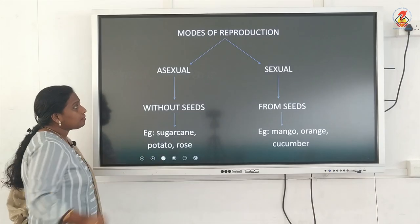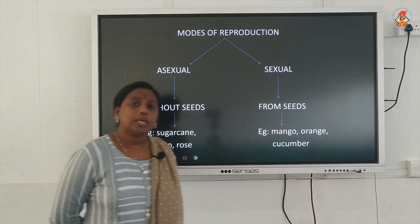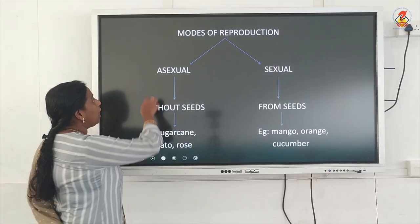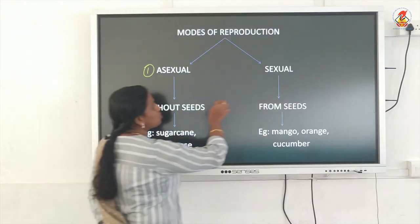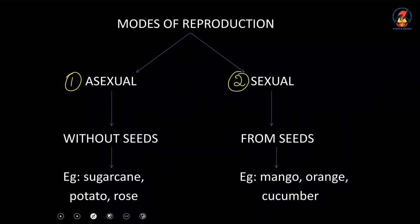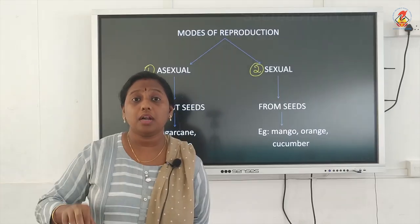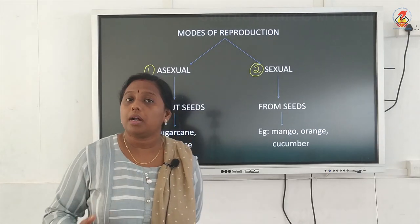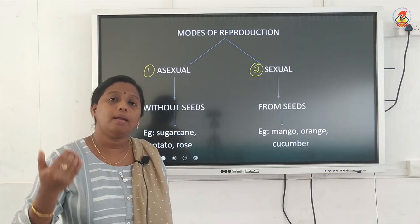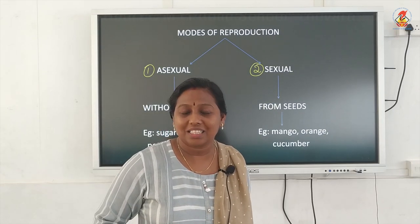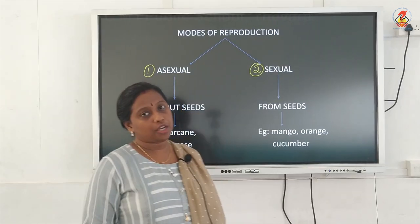In a plant, you can observe two different types of reproduction. Number one is asexual reproduction and number two is sexual reproduction. In asexual reproduction, if the plant is reproducing or creating a new small plant without the production of seeds, you call it asexual reproduction.